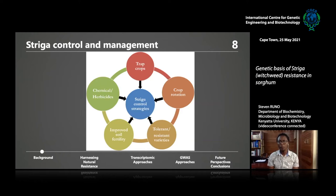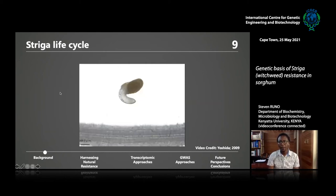What people now propose is to combine all these methods in an integrated approach, but an approach that highly leverages on resistant sources. At this point, I want to describe the Striga biology and life cycle, because the rest of this discussion is going to hinge on this.